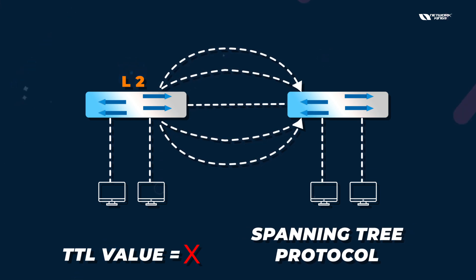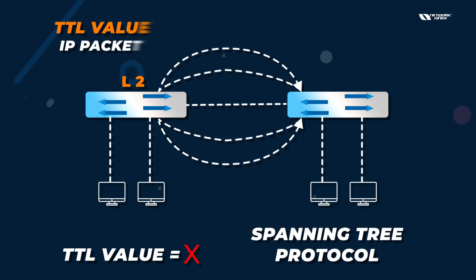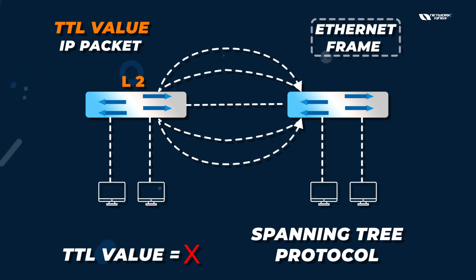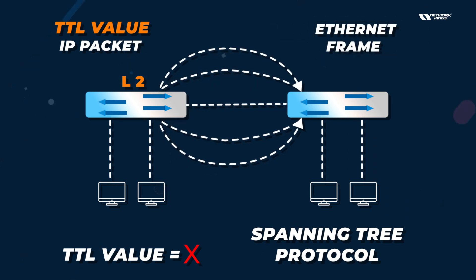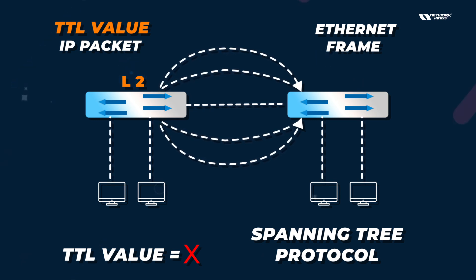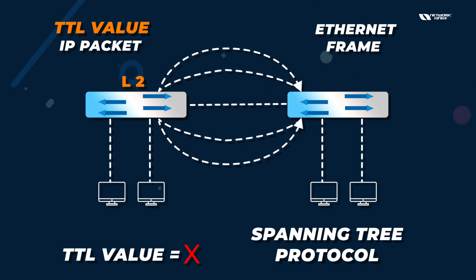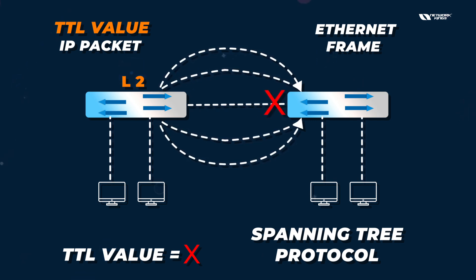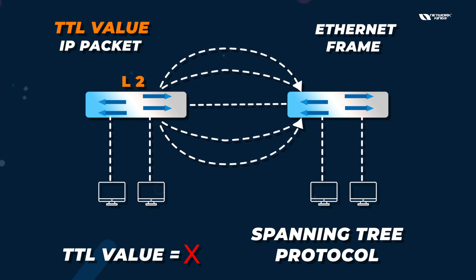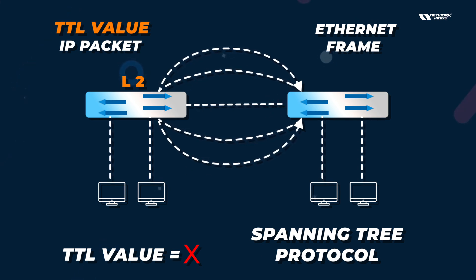Spanning Tree Protocol was discovered because we don't have TTL value in Ethernet frames. Spanning Tree is a default protocol running on devices — it will block one port if you have multiple links, because loops only happen when you have multiple links.